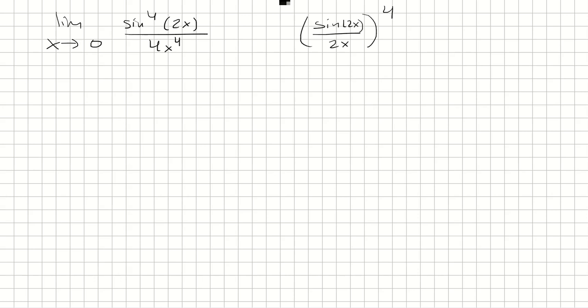So that's what we want to get to, which this is sine to the fourth 2x over 16x to the fourth, because 2 to the fourth is 16. So I want to replace the 4 here with the 16.